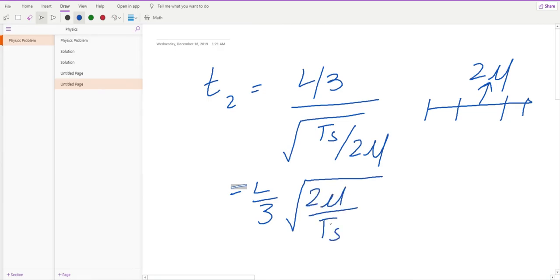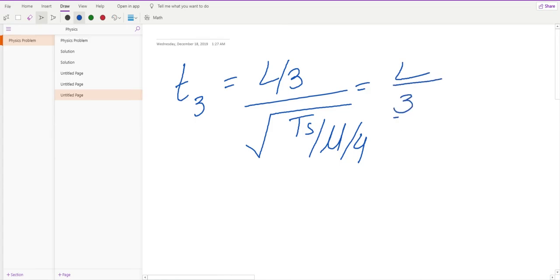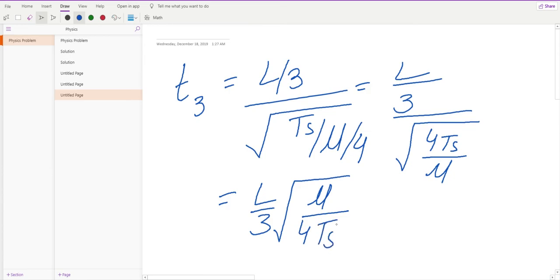Similarly, I will find t3, which is equal to my displacement, which is length of string, divided by tension of string divided by mu over 4. I can rearrange this to get my final value of L over 3 times the square root of mu divided by 4 times tension of string.